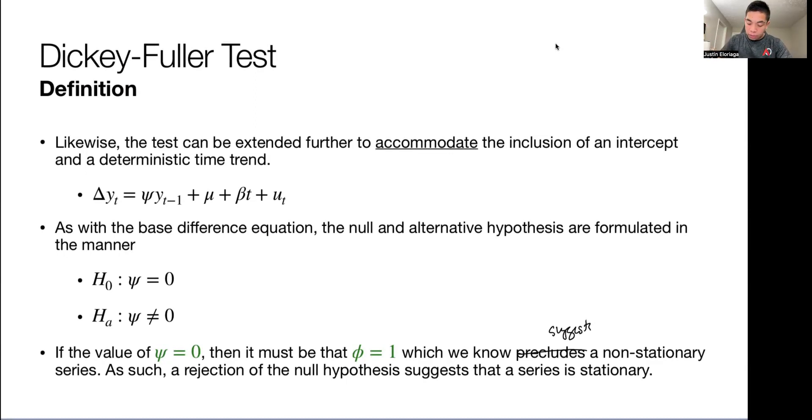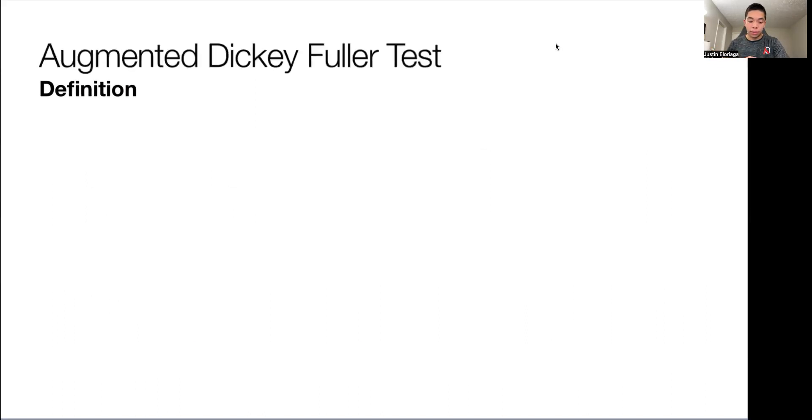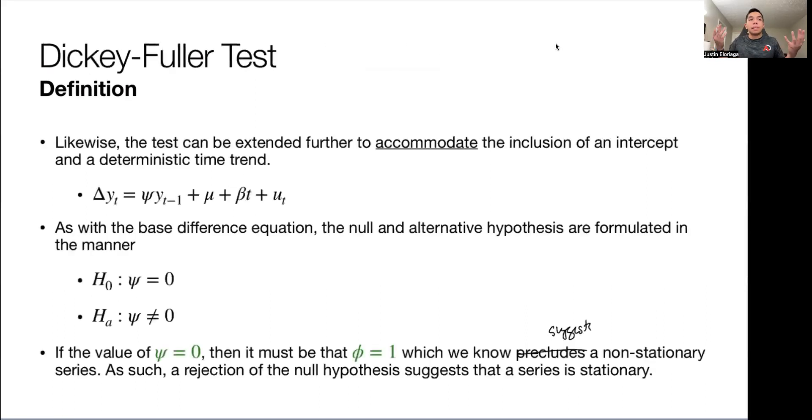As such, a rejection of the null hypothesis suggests that the series is stationary. So if we reject the null hypothesis, then the series is stationary. That's the base Dickey-Fuller test. Not really all that difficult to understand. We just use a difference form of the AR and test the value of that psi term. That's about it.